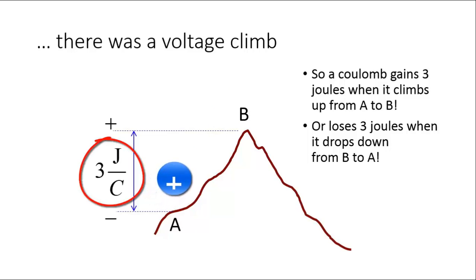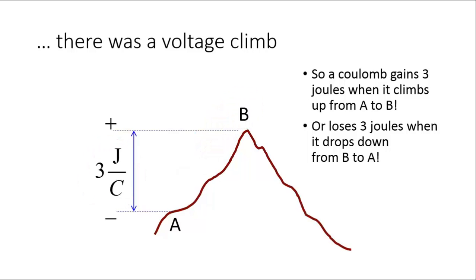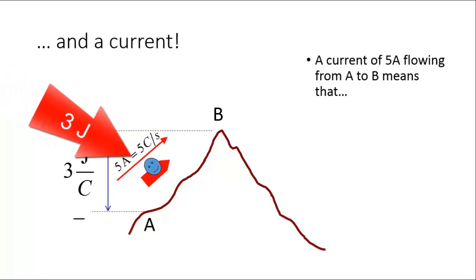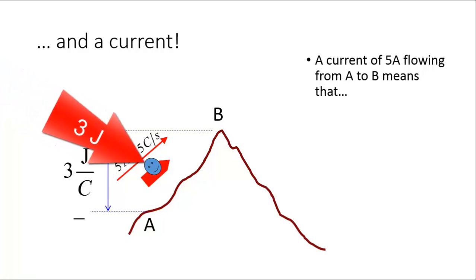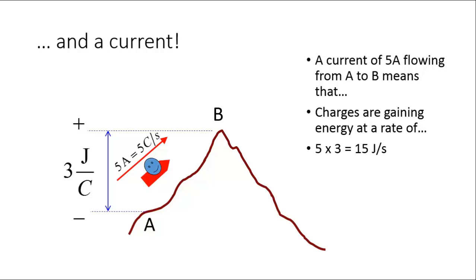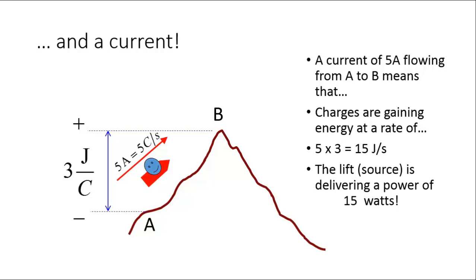That source gives 3 joules to every coulomb it moves up from A to B. Now, consider there is a current of 5 amps flowing uphill from A to B. That means that every second, the source in that current path has to provide energy for 5 coulombs climbing up. The source has to give 3 joules to each one, so the path between A and B is delivering 5 times 3 joules every second — that is, 15 joules per second. But joules per second is watts. So, if there is a current climbing up from A to B, there has to be a source in the current path delivering 15 watts of power.